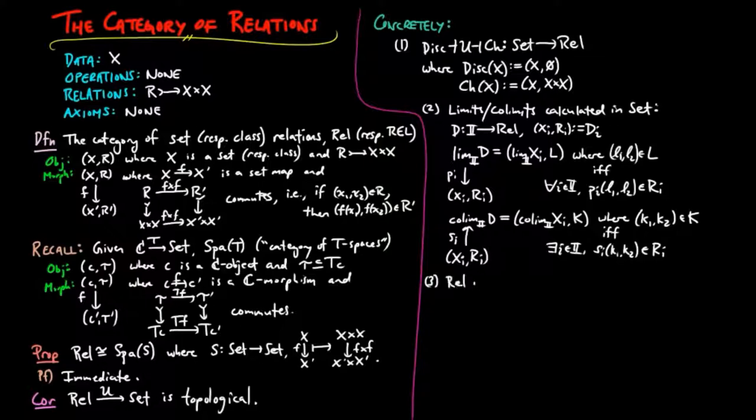Three: the category of relations is fiber-small, since the collection of subobjects on the binary product of X is a set for each set X.